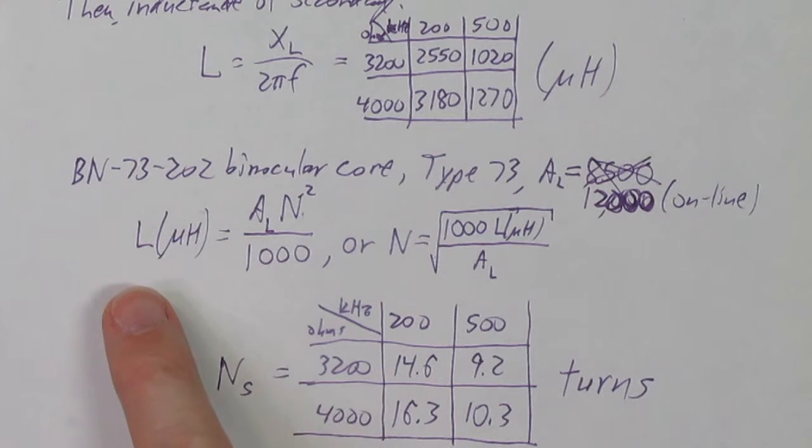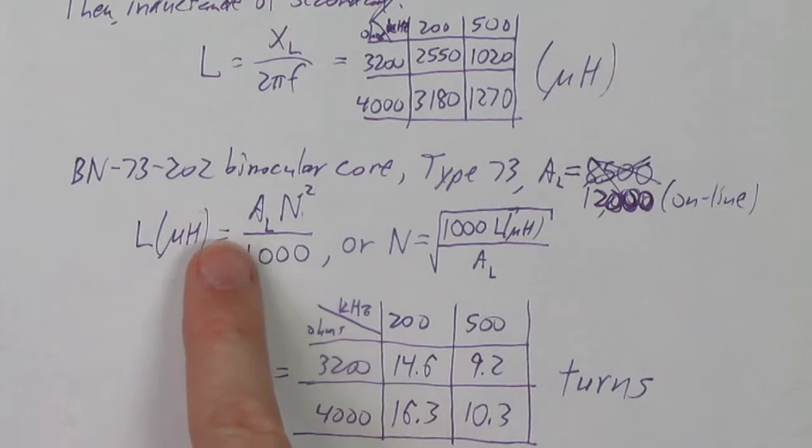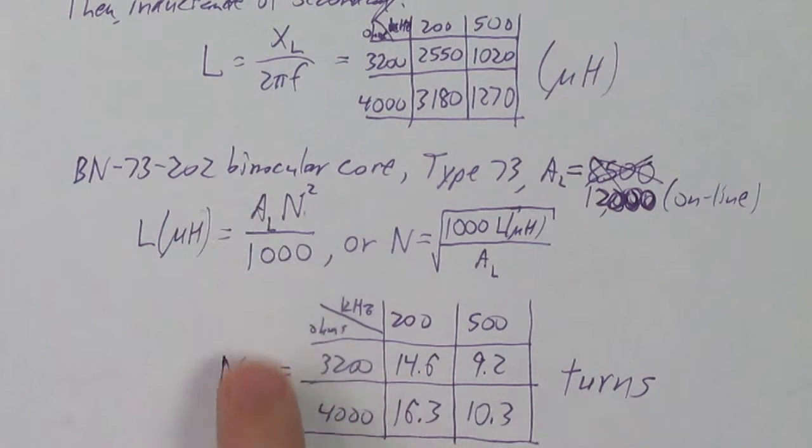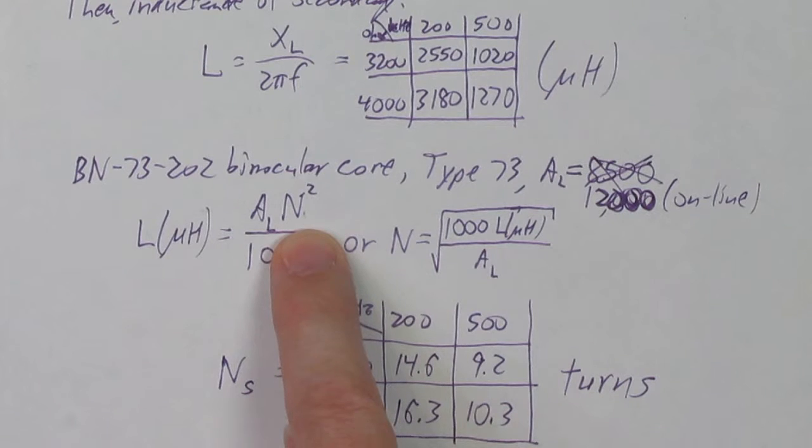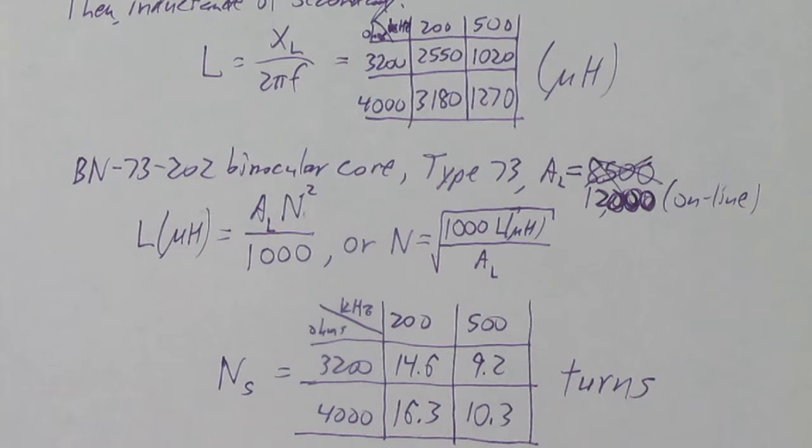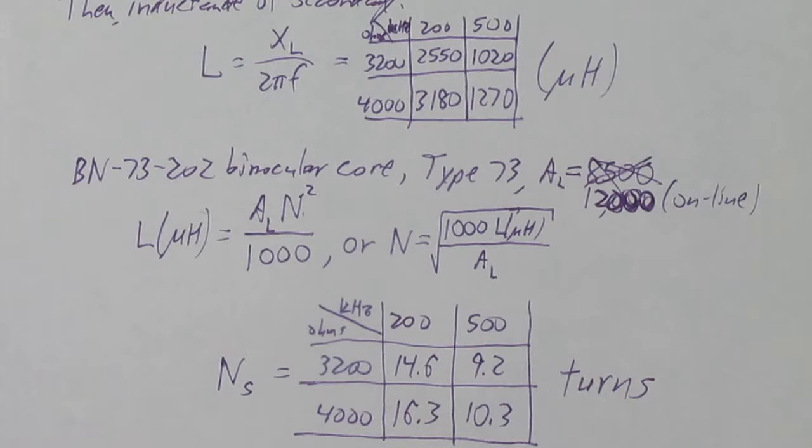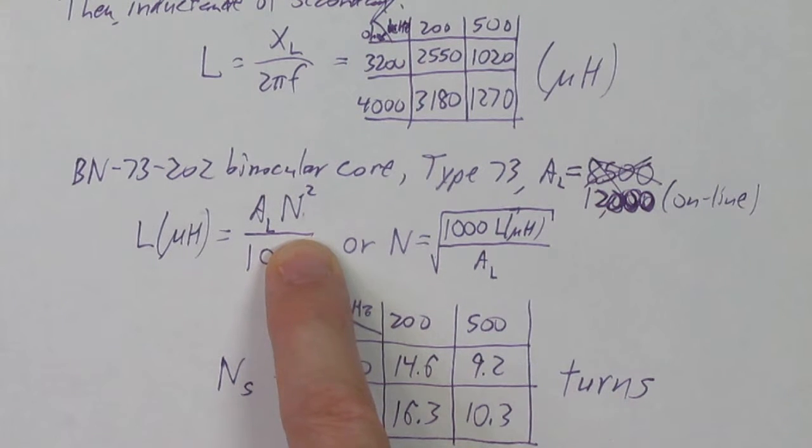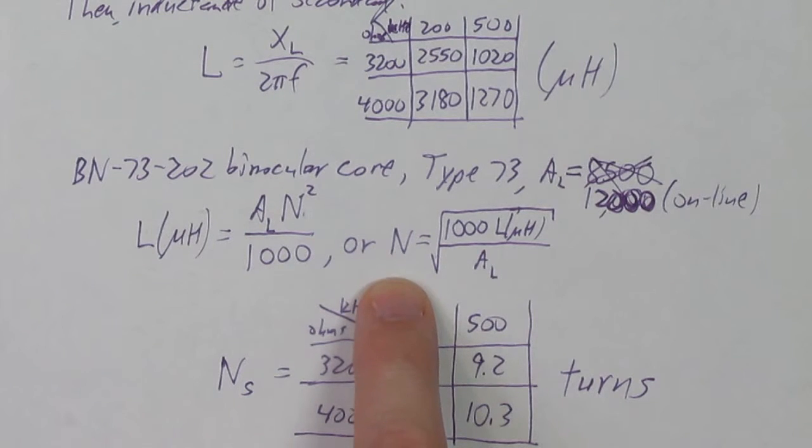And so the inductance that you get is that AL value, that value per 1,000 turns, divided by 1,000 times the number of turns squared, because each turn affects each other. So you've got turn 1 affecting turn 2, 3, 4, 5, whatever, and turn 2 affecting 1, blah, blah, blah, and all the other ones. And so that ends up giving you an N squared value. And so you invert this to figure out how many turns you need.